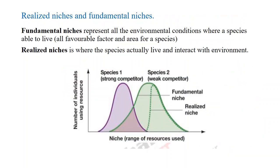Now we will discuss what is the fundamental niche and the realized niche. The fundamental niche represents all environmental conditions where a species is able to live without any environmental barrier — this is a hypothetical concept. The realized niche is the niche a species actually occupies and interacts within the environment — it refers to how many places it can actually live.